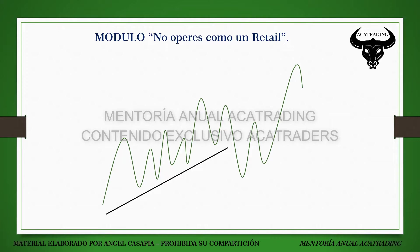Si están en un contexto en el que calculan que el precio les brindará 20 o 30 pips de movimiento y quieren aprovecharlos, perfecto. Pero si van a esperar que el precio neutralice esos 30 pips para luego tener un siguiente setup en un nivel de temporalidad mayor que permita expandir 50, 80 o 100 pips, también pueden hacerlo. Lo que ustedes quieran operar es lo que su criterio les indique.